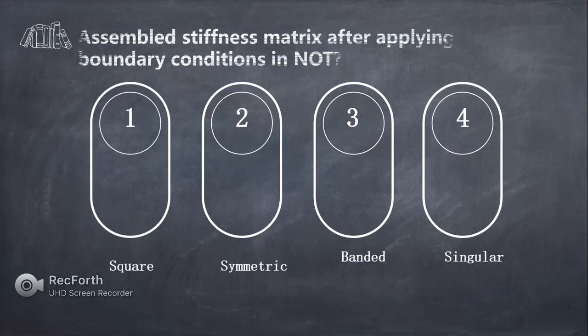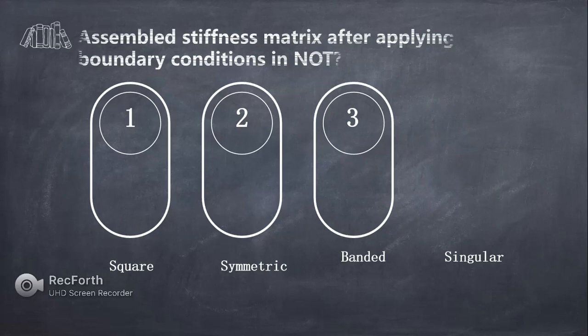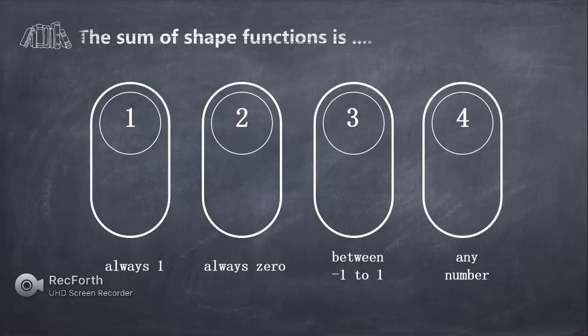The fourth question is: the assembled stiffness matrix after applying boundary conditions — is it square, symmetric, banded, or singular? The right answer is the fourth option: after applying boundary conditions, it will not be singular.